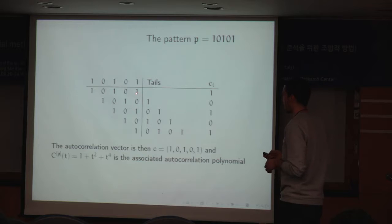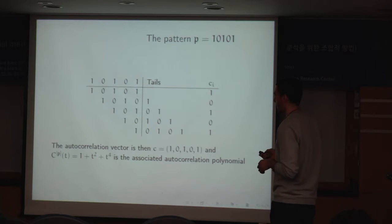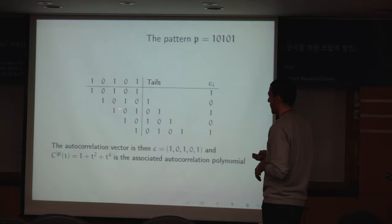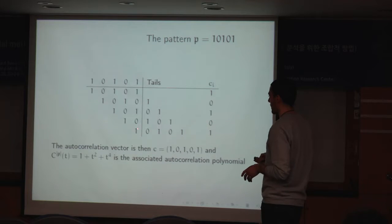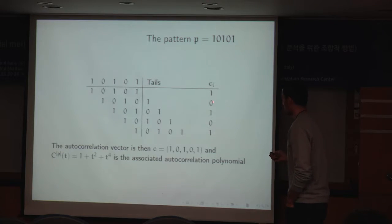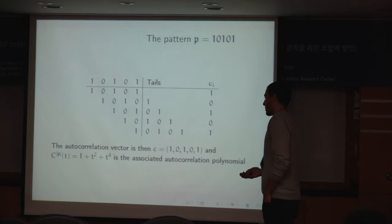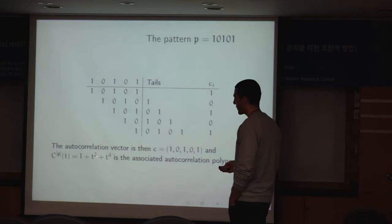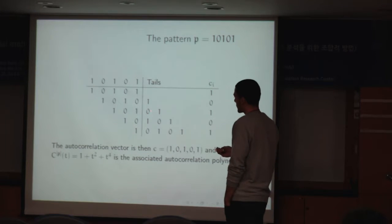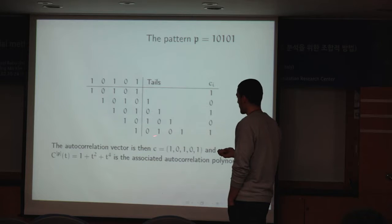First we have the pattern as it is; then we shift right and find no match; we shift again and find a match because we have 101101; we shift again and find no match; and finally there is one more match. It is natural to associate to the autocorrelation vector a polynomial which includes a monomial corresponding to each position where we have seen a match. So we have a match for t to the power of 0, t to the power of 2, and t to the power of 4.